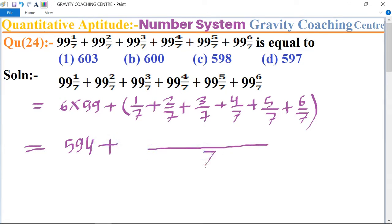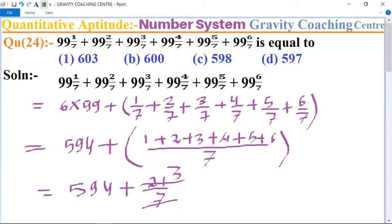And no change in numerators, so 1 plus 2 plus 3 plus 4 plus 5 plus 6. And equal to 594 plus 21 upon 7, and 21 is cancelled by 3, so 594 plus 3.